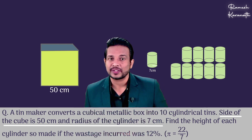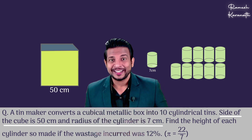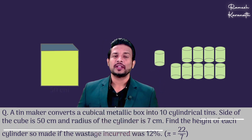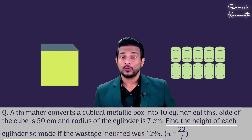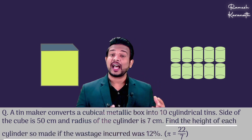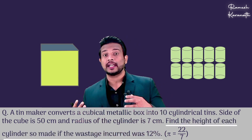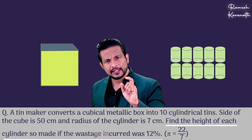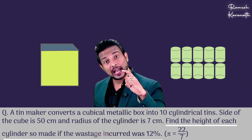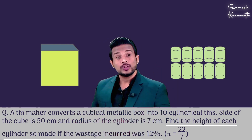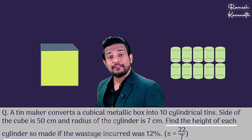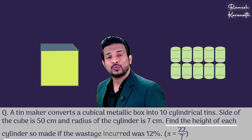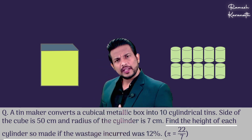We have understood this information. Now, find the height of each cylinder — we have the radius, and we have to find the height — if the wastage incurred was 12%.